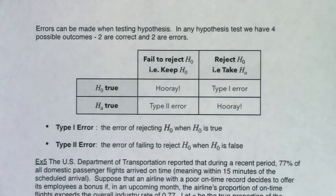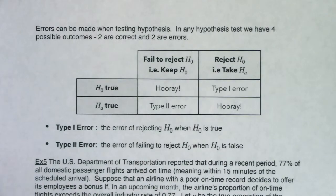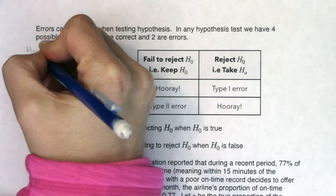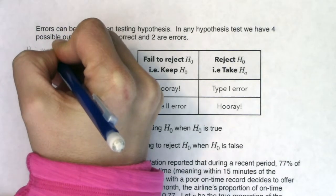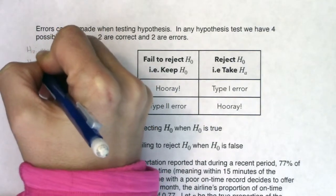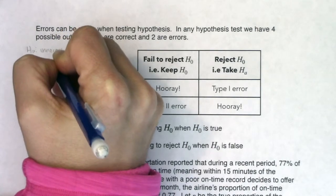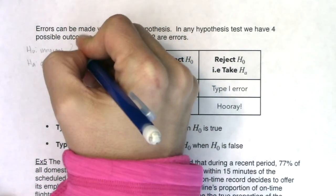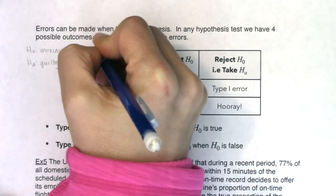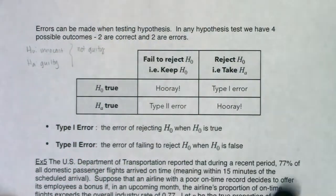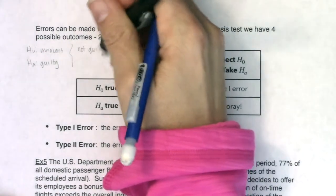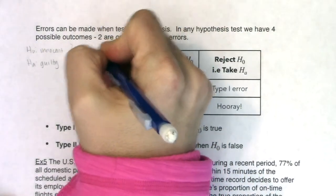Let's take a look at the errors that can be made when testing hypotheses. In any hypothesis test you always have four possible outcomes: two are good and two are bad. That's true of our criminal justice system as well. H naught presumes a person is innocent and H_A is that the person is guilty. We can return a verdict of not guilty or guilty.